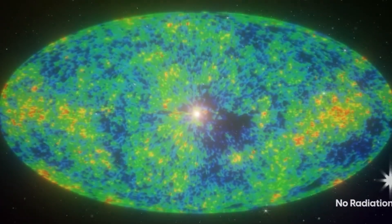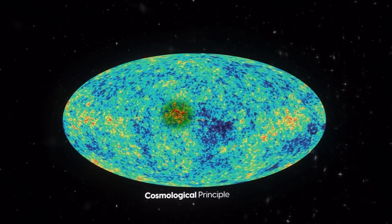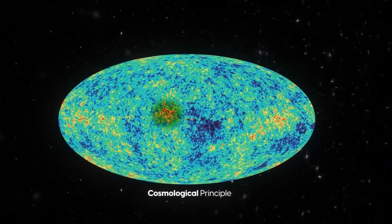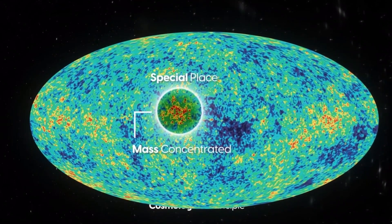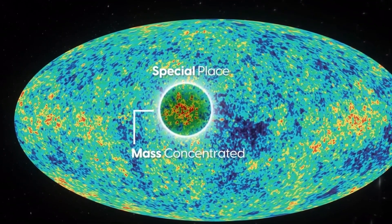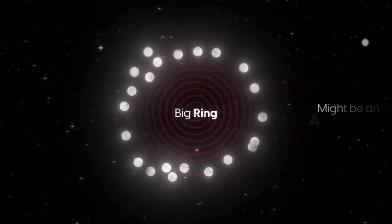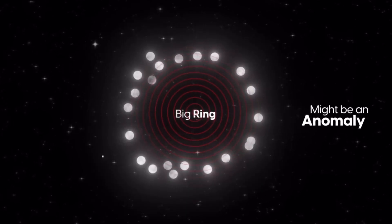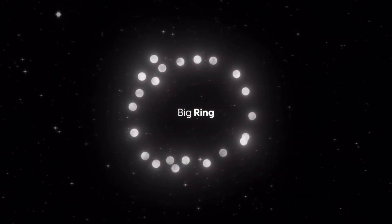But the Big Ring megastructure that we have discovered goes completely against this cosmological principle because it represents a special place in the universe where a significant amount of mass is concentrated. Plus, if we only found one such structure, it would have been acceptable. It could be an anomaly, or we could have said that maybe scientists made a mistake in measuring it.